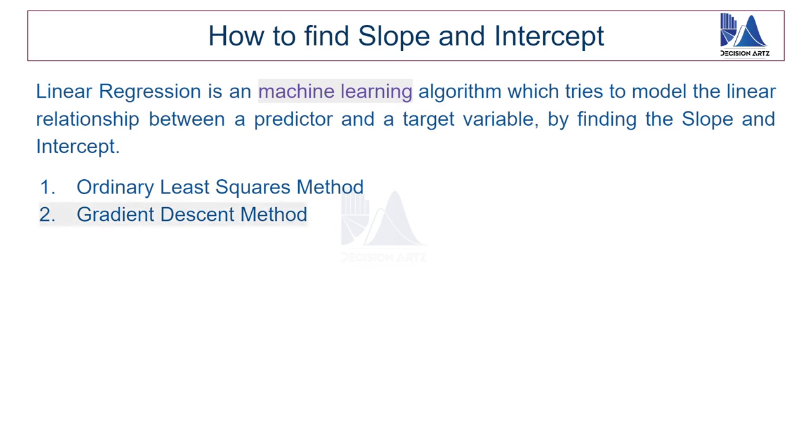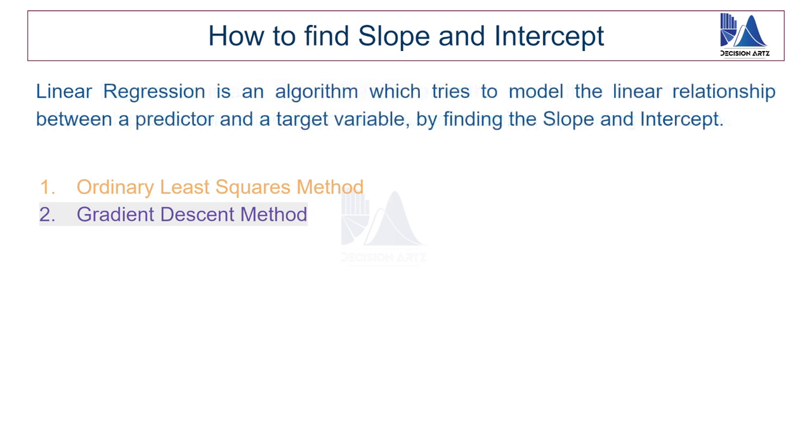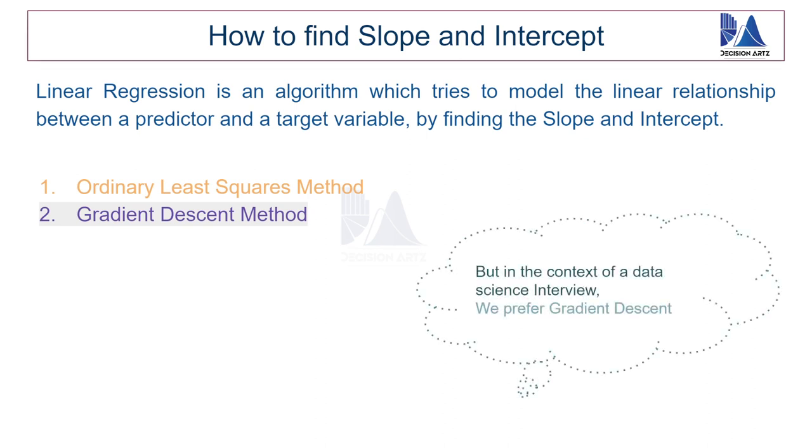Now pay attention to what I'm about to say. Well, this gradient descent algorithm uses the machine learning constructs to solve the linear regression problem. Whereas ordinary least squares, on the other hand, is not a machine learning algorithm. It's just a formula algorithm. So it's not accurate to call the linear regression algorithm as a machine learning algorithm. But hey, we're talking about data science interviews here. So we still want you to talk about gradient descent. But in order to do that, first let's rule out ordinary least squares.